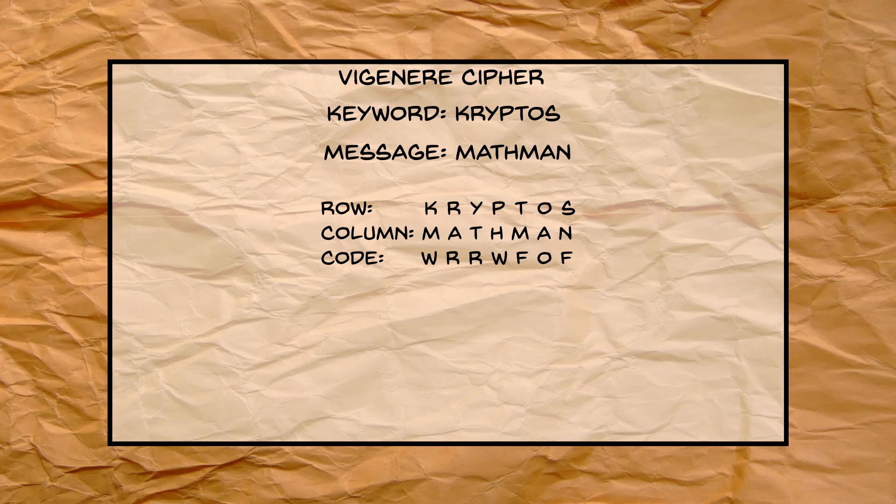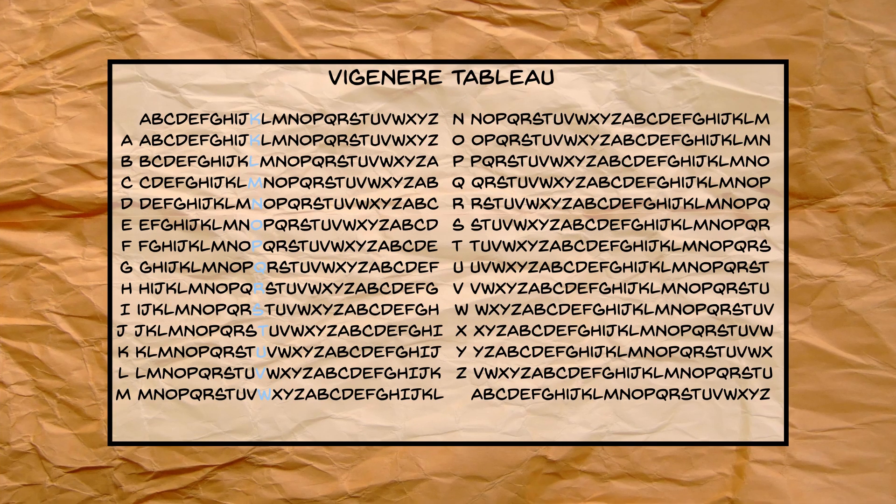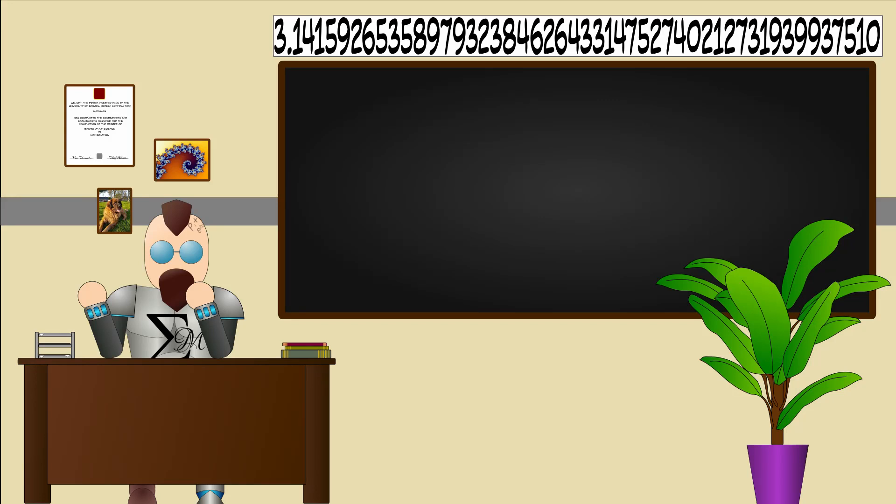Decoding works the same way. Knowing the keyword you can look at the column corresponding to the first letter. In our case the kth column. See where the w is located and by finding the row it is in you see which letter should be the message. M. Okay enough of that. Let's get back to Kryptos and its solutions.